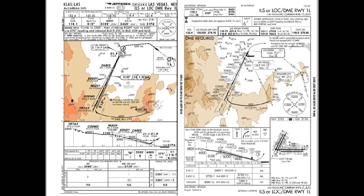Hi everyone, this is Will with KL Aviation, and in this lesson we're going to look at the differences between Jeppesen and FAA or NACO approach charts published by the US government. Here we have two charts for the same approach. On the left, we have the Jeppesen ILS or localizer DME-1L to Las Vegas, Nevada, and on the right we have the FAA published chart for the ILS or localizer DME-1L to Las Vegas, McCarran.